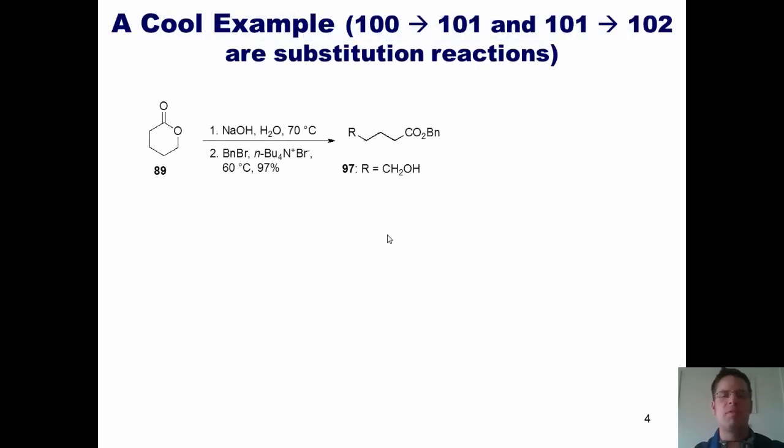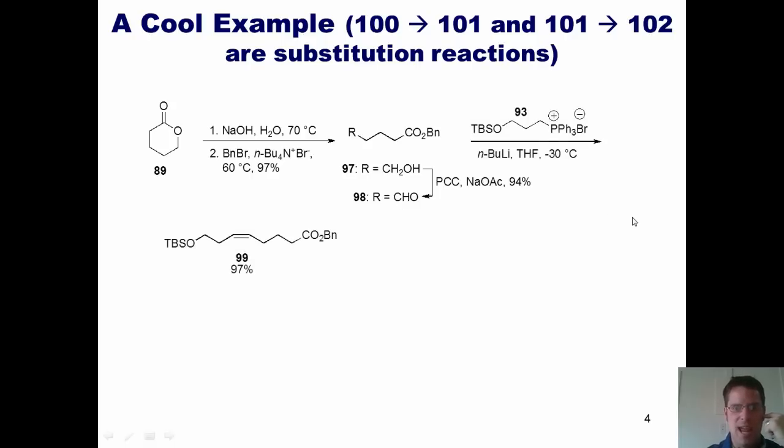Before getting into that, I wanted to show you one cool example from my graduate school years. Many years ago, I took this molecule, which I've numbered 89, and I reacted it under these conditions to convert it into this molecule, 97. I then took 97, which had a terminal alcohol at this position, and converted it into an aldehyde using these conditions. I then took this molecule 99, which has a terminal aldehyde, and reacted it with this molecule, which is called a Wittig reagent, to convert 98 into 99.